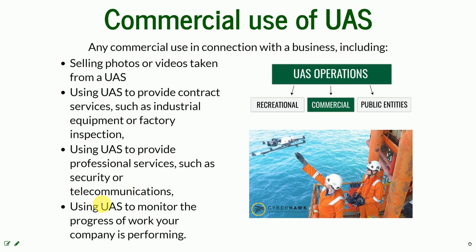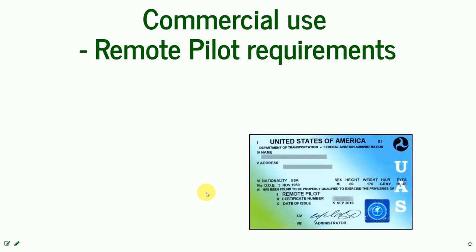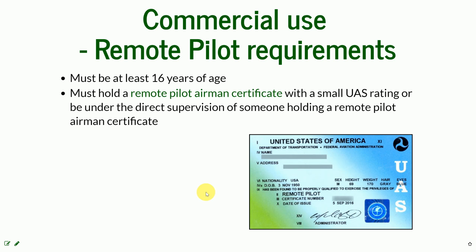If you use a UAS to monitor the progress of work your company is performing, even if you are not paying yourself directly, because the company makes a profit, this is also considered commercial use. For commercial use, the remote pilot must be at least 16 years of age and must hold a remote pilot airman certificate with a small UAS rating, or be under the direct supervision of someone who holds that certificate. You need to have that certification ID on your person when flying, or be accompanied by someone who has the certificate.